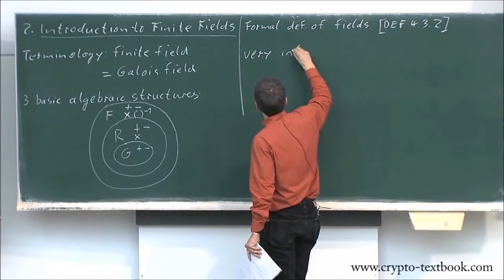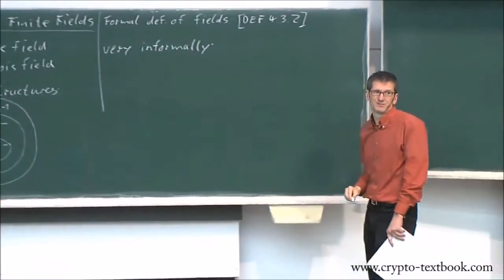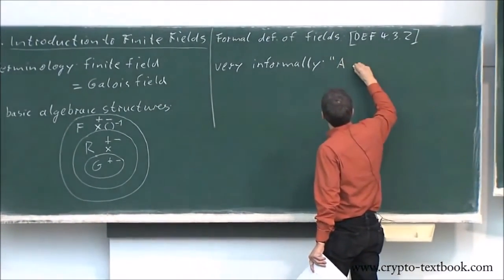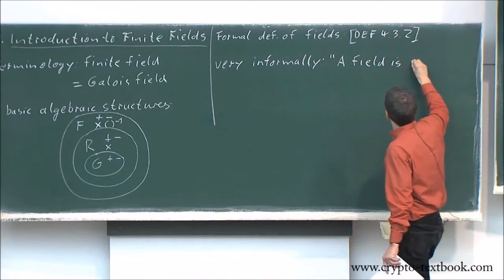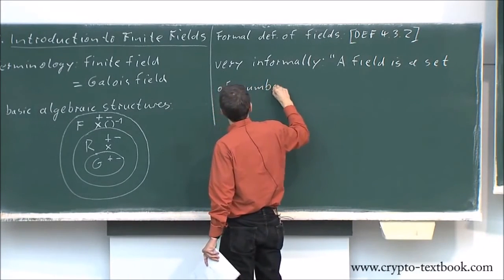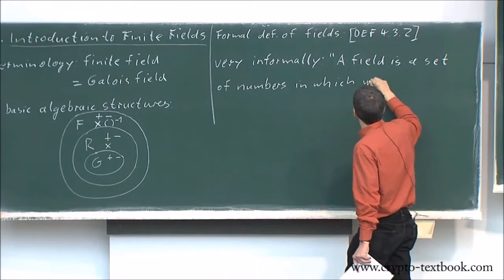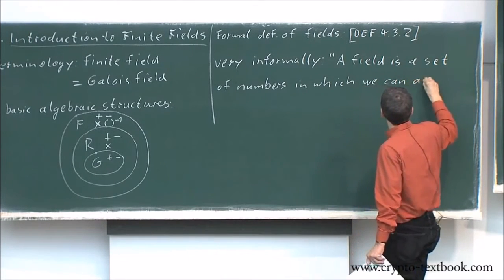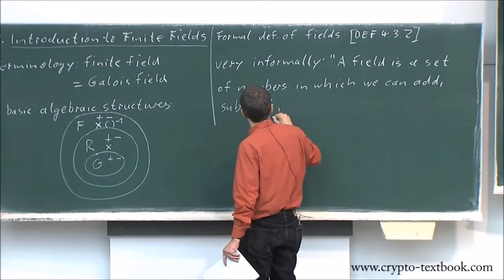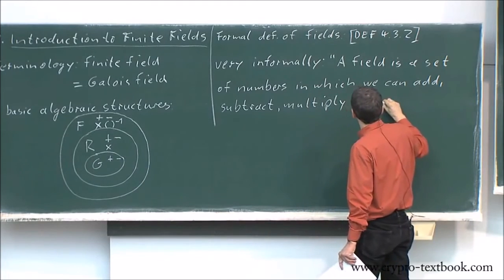Very informally, very umgangssprachlich, very informally what a field is: a field is a set of numbers in which we can add, subtract, multiply, and divide. End of quotation mark.